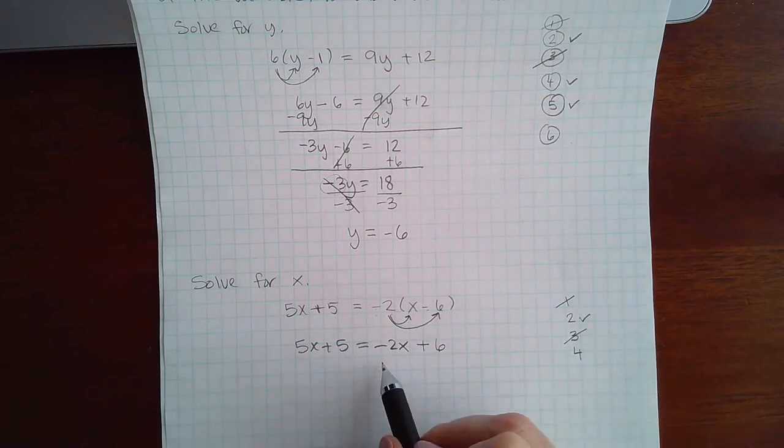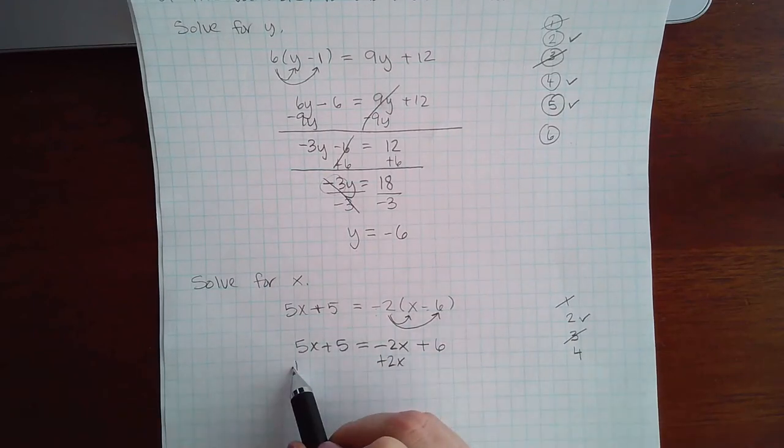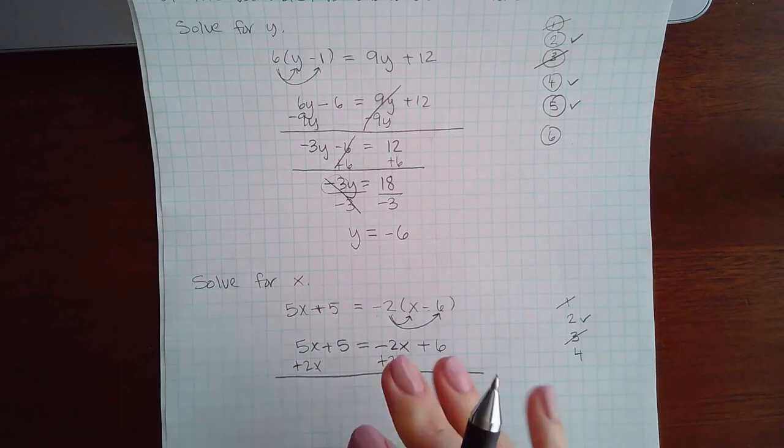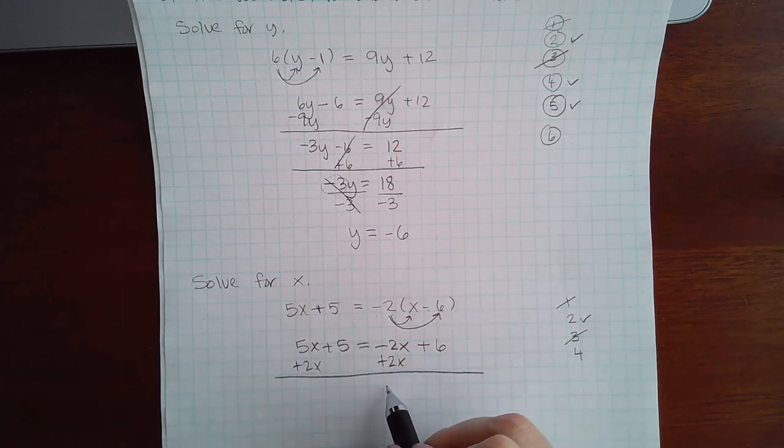Step 4 is to move these variables over to that side, so I'm going to add 2x. Remember, to move the whole term, you have to use the opposite sign.